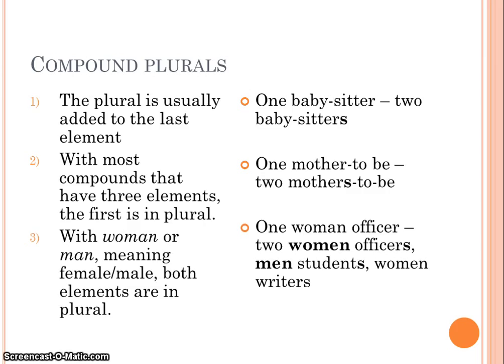With most compounds that have three elements, the first is in plural: one mother-to-be, or two mothers-to-be. With woman or man meaning female or male, both elements are in plural: one woman officer, but two women officers; men students; and women writers.